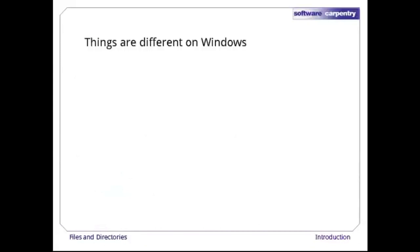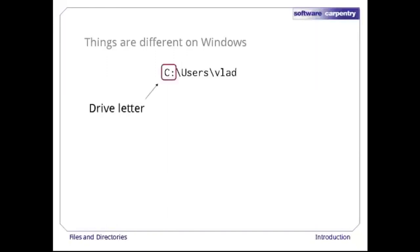Everything we have seen so far works on Unix and its descendants, such as Linux and Mac OS X. Things are a bit different on Windows. Here's a typical directory path on a Windows 7 machine. The first part, C:, is a drive letter. This notation dates back to the days of floppy drives, and even today, each drive is a completely separate file system.